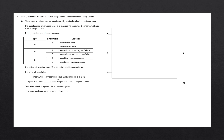The inputs to the manufacturing system are shown in this table. The system will sound an alarm, X, when certain conditions are detected. The alarm will sound when the following conditions are met.